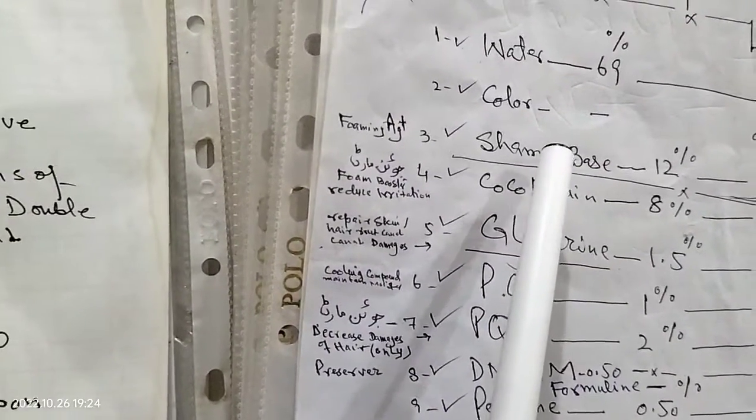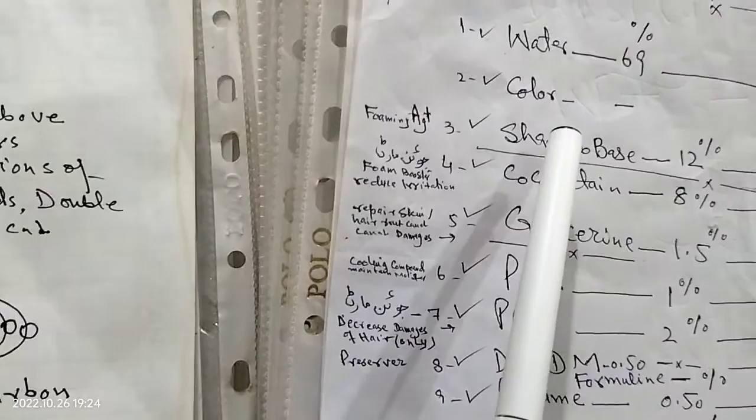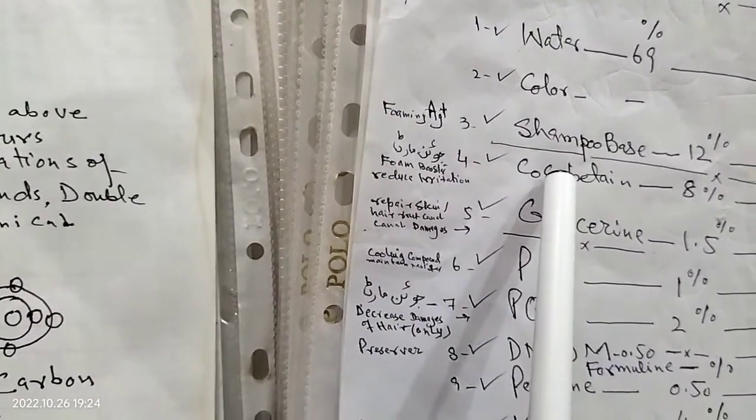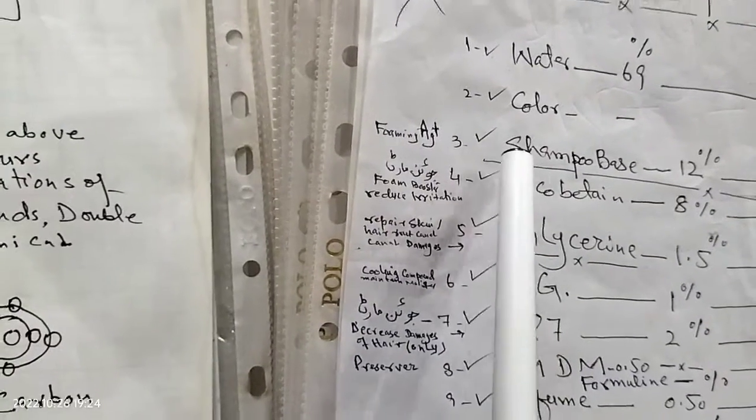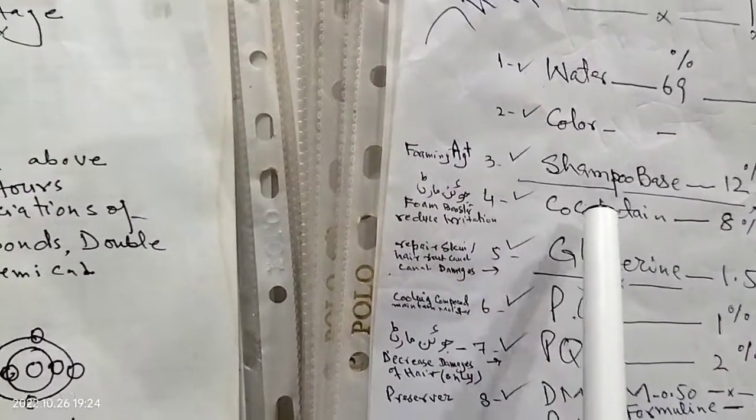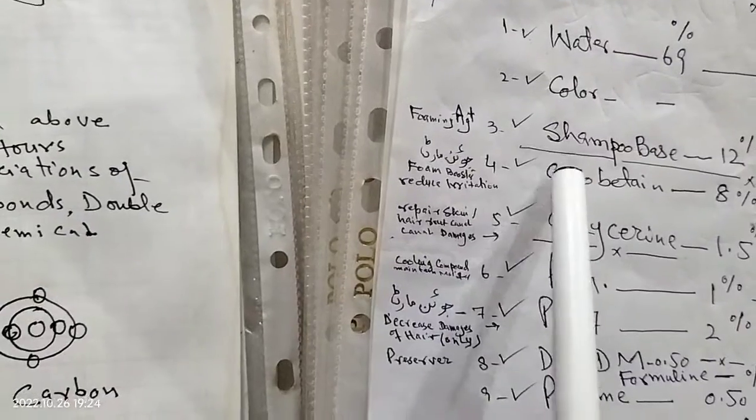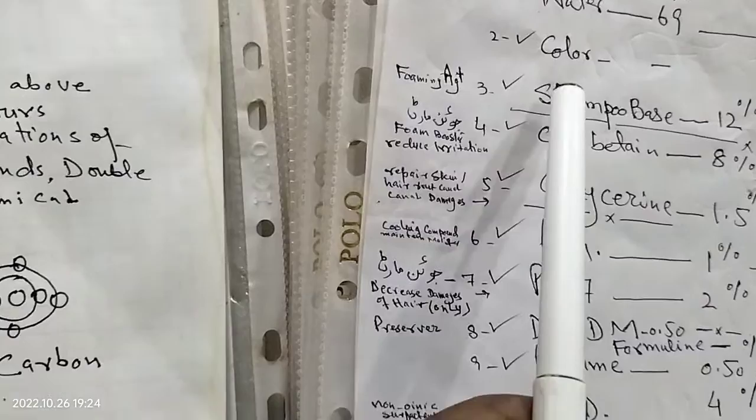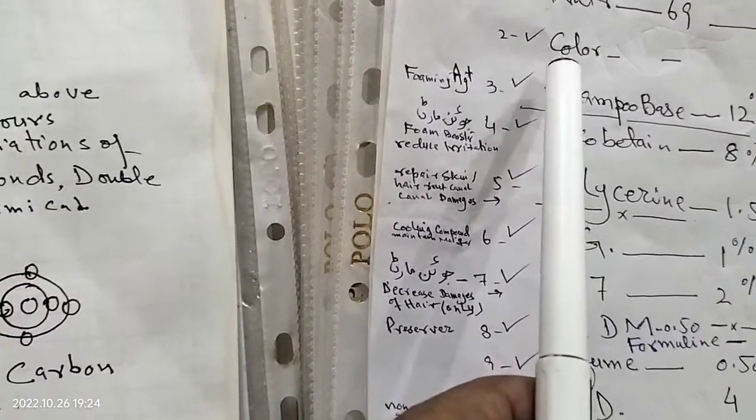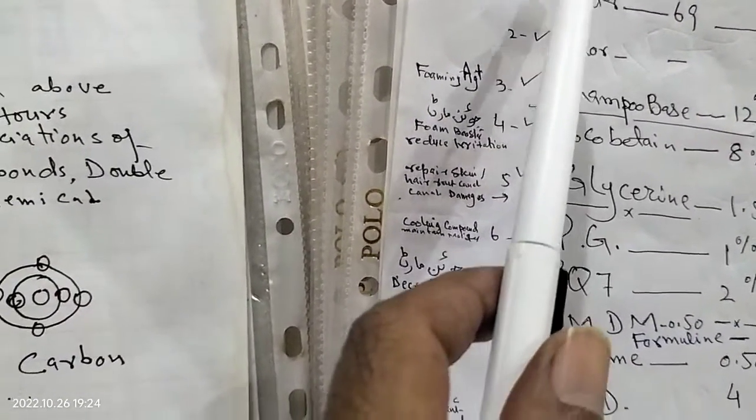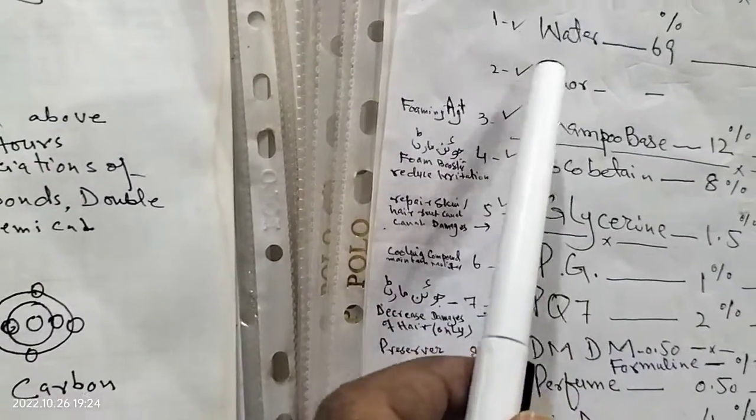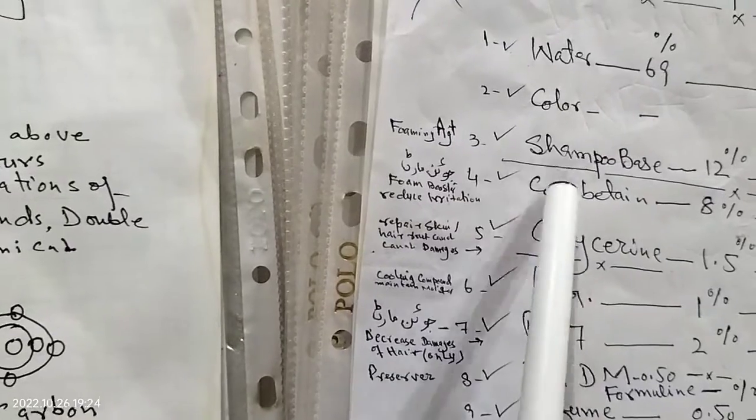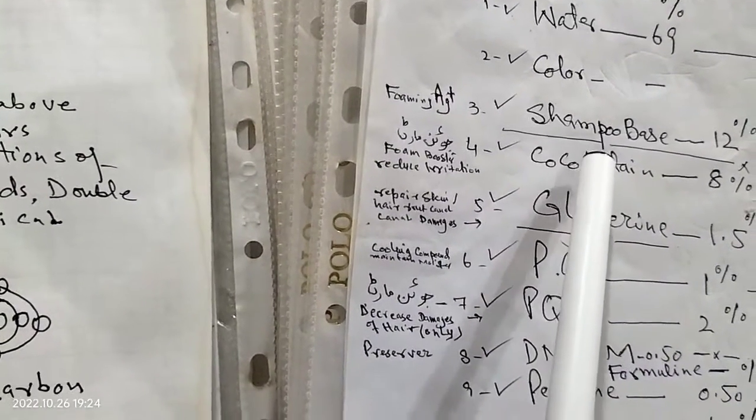After four hours, after six hours, we add cocoa betaine. Cocoa betaine is working also as a fatty acid. React with base, shampoo base. Water, color, three chemicals base, mix with cocoa betaine for about 20 minutes.